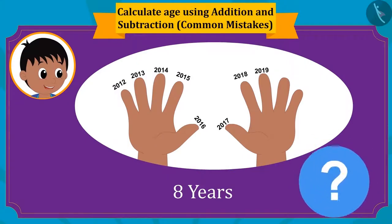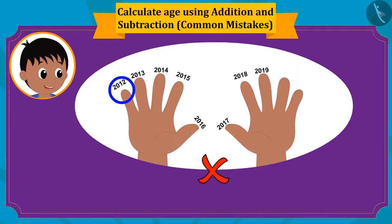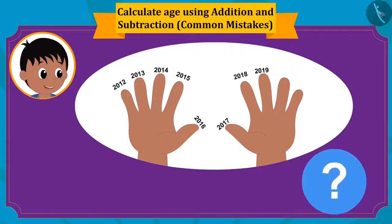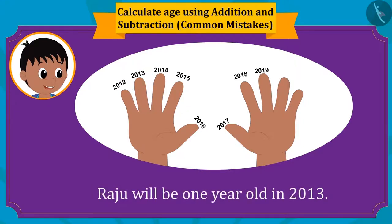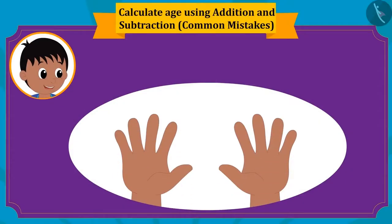Children, has Raju counted his age properly? Raju has made a mistake. He started counting from 2012, while he should start counting from 2013. Because Raju will be 1 year old in 2013 and not in 2012. Remember, children — whenever you are counting on your fingers, you should start counting from the next year of your birth year.